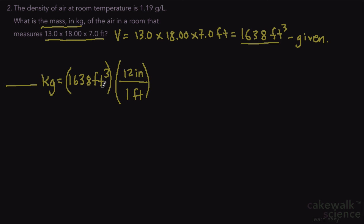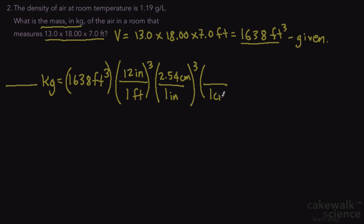We need to find a way to get from feet to liters. We know that one foot is 12 inches, but we need to cube that to cancel the units. One inch is 2.54 centimeters, and we need to cube that too so the inches cancel out, leaving us with cubic centimeters. We know one cubic centimeter equals one milliliter, and from there we can get into the liter zone. One milliliter equals 10 to the minus 3 liters.